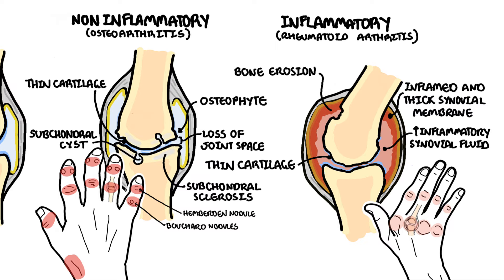In rheumatoid arthritis, the joints affected in the hands are namely the wrist, the metacarpophalangeal joint, and the proximal interphalangeal joint. Over time, you can get ulnar deviation and something called Z-deformity of the thumb.